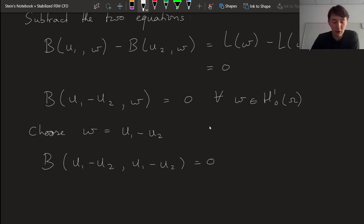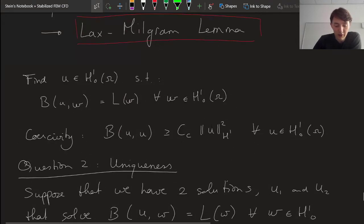And now we have a little bit of a conflict, because by definition of our coercivity of a bilinear form, if we have the same function in both slots, then it has to be larger than 0.